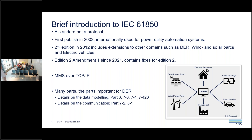IEC 61850 is not a protocol but a standard for system automation. It has quite a few parts elaborating on many different aspects of system automation and engineering. It's an old standard, first published in 2003, with a second edition in 2012 more focused on broader domains — renaming it an automation system instead of utility-focused. In this second edition, elements were added for wind, solar, and also electric vehicle assets. Amendment one, published in 2021, mainly contains fixes, so always make sure to have the latest documents.